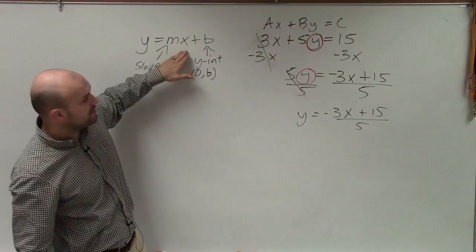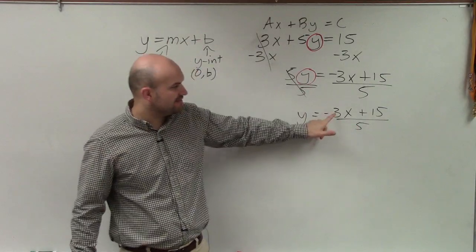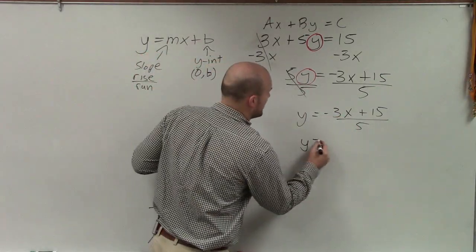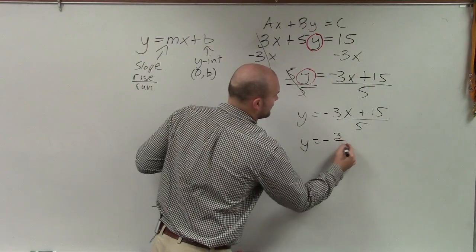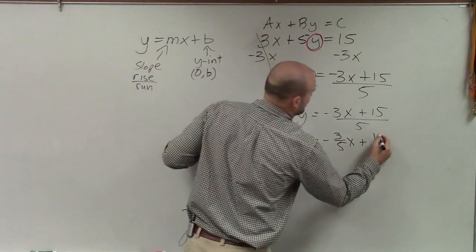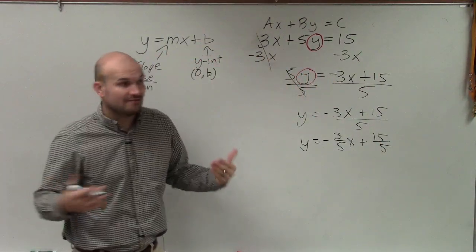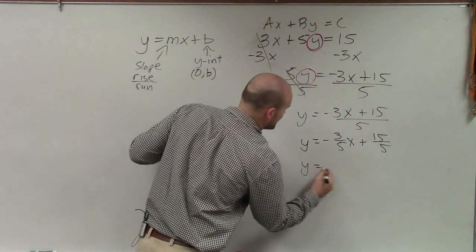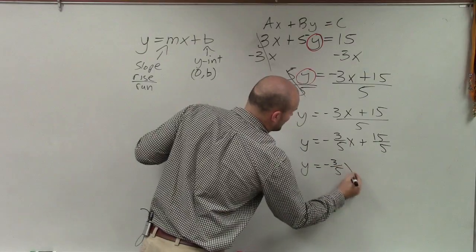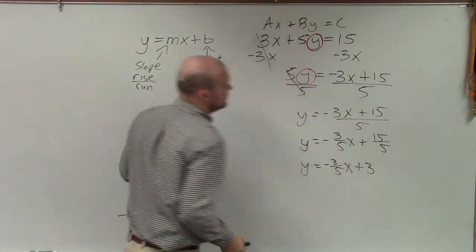But when we're graphing it in slope-intercept form, we're going to want to make sure we divide that 5 into both of them. So I have y equals negative 3 fifths x plus 15 over 5. I'm just doing this every single step, so hopefully everybody has good notes.